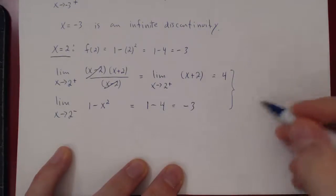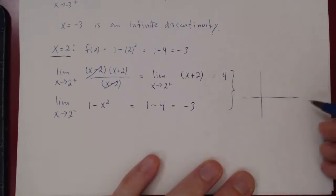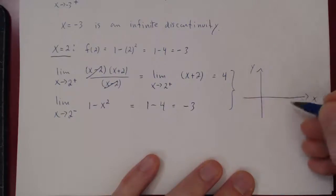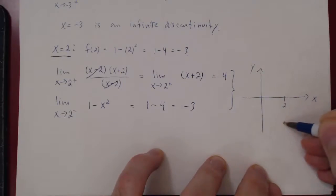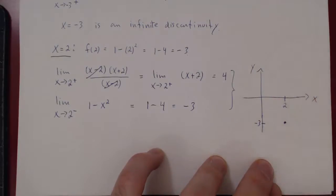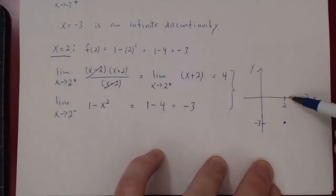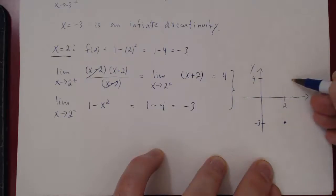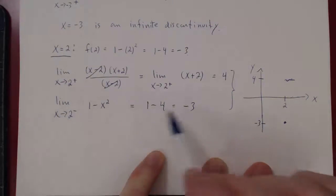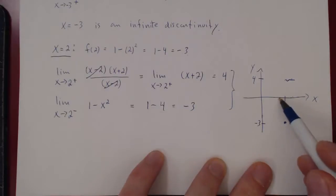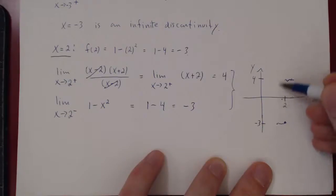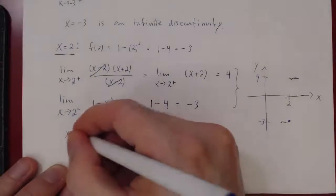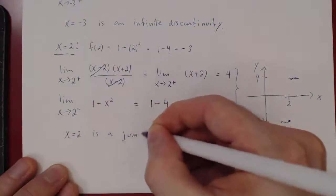The value of the function exists at x equals 2 with y value negative 3. The limit from the right exists and equals 4, while the limit from the left exists and equals negative 3. As we approach 2 from the right, y is really close to 4; from the left, y is really close to negative 3. There is a jump in the function, so our conclusion is that x equals 2 is a jump discontinuity.